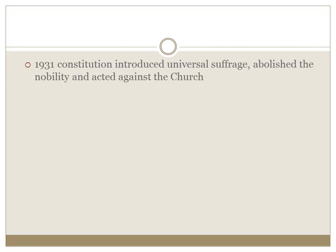Taking a general overview: in 1931 a constitution was introduced. This constitution reintroduced universal suffrage — allowing everyone the right to vote, and more advanced than the previous constitution, which only provided universal male suffrage. Now it applied to both men and women. They were also going to abolish the nobility and act very aggressively against the Catholic Church.